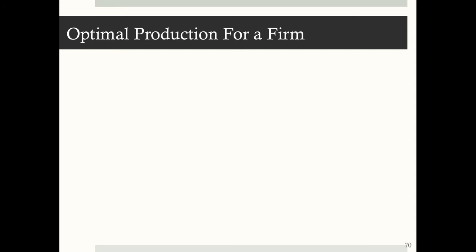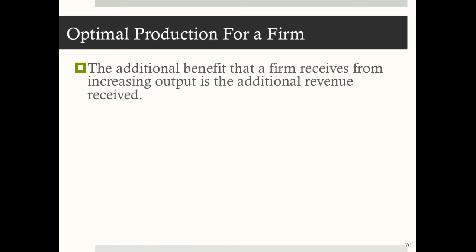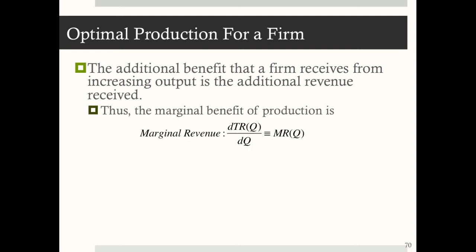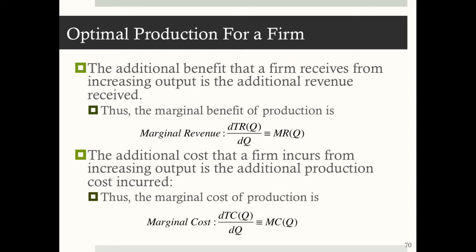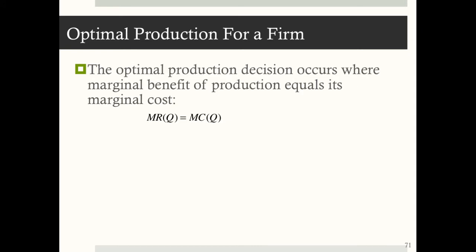The optimal production level for a firm using marginal analysis works as follows. The marginal benefit a firm receives from increasing output is the additional revenue received — thus the marginal benefit of production is the derivative of total revenue with respect to quantity, which is just marginal revenue. The additional cost incurred from increasing output is the additional production cost — marginal cost is simply the derivative of total cost with respect to quantity.